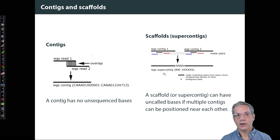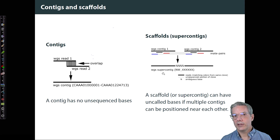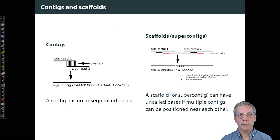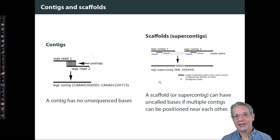A scaffold may have unknown bases if multiple contigs can be positioned near each other. There are a variety of ways to do this. If you'd like to learn more about assembly, you can take LSM 3241, where these processes are discussed in more detail starting in the first or second week.